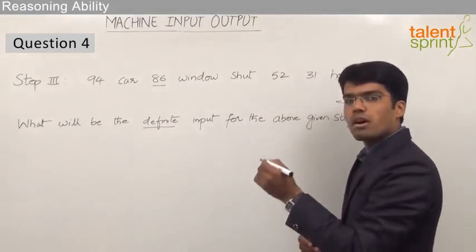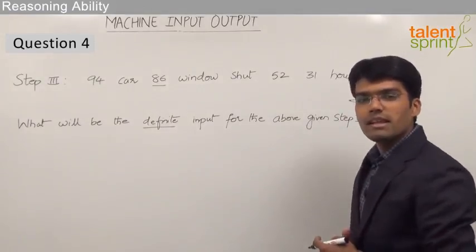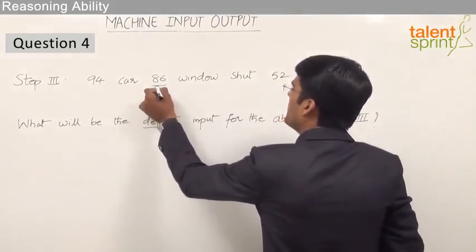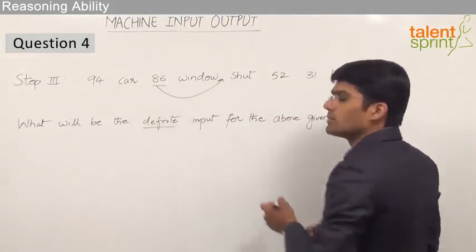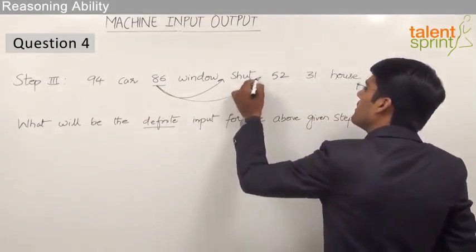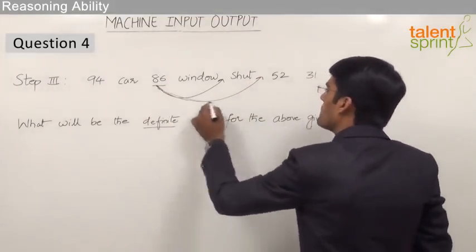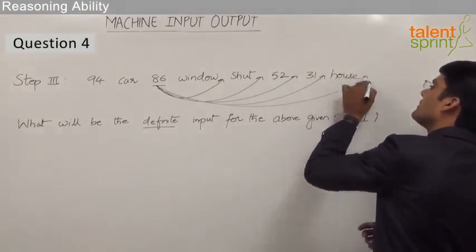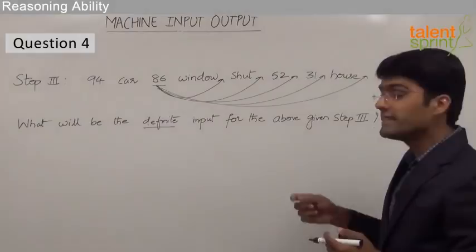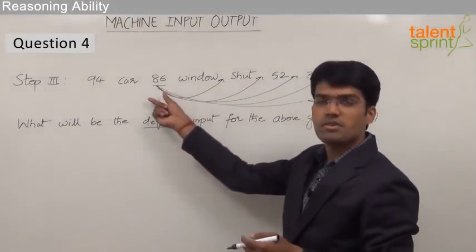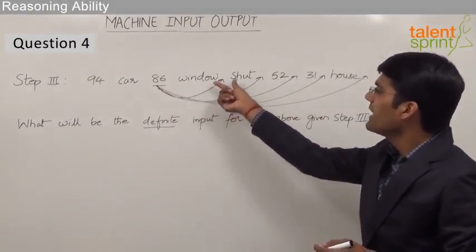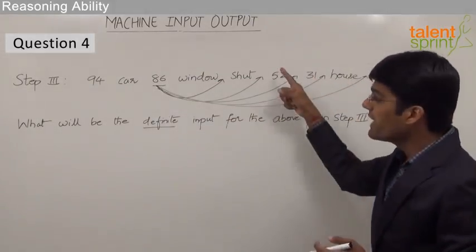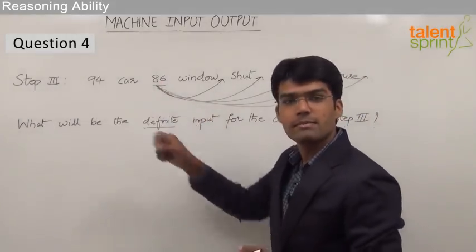So I can say that 86 might be after window, or it might have been brought from this position, or maybe from this position, or from this position, or from this position. As you can see, there are various cases possible. That means 86 could have been in any of these five positions in the previous step. But we cannot say what exactly was the position of 86 out of these five possibilities.